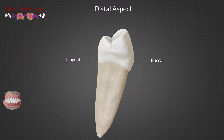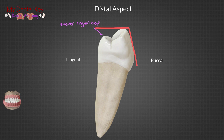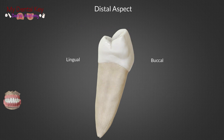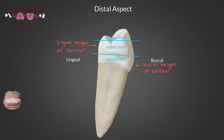Now we will take a look at the distal view. We can see from this view again how small the lingual cusp is compared to the buccal cusp, just like the mesial view. This side also has a rhomboid shape. We see a root developmental depression; however, the mesial will have the deeper of the two. Here you can see the buccal and lingual heights of contour very clearly — the buccal height of contour is in the gingival third, while the lingual height of contour is in the middle third.